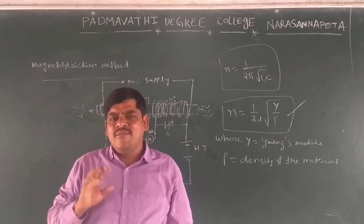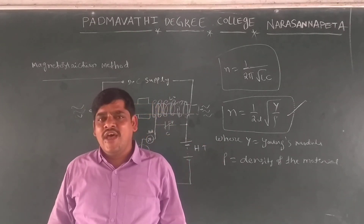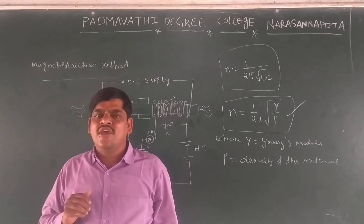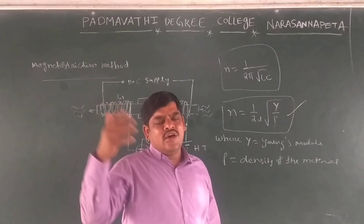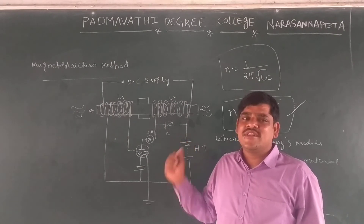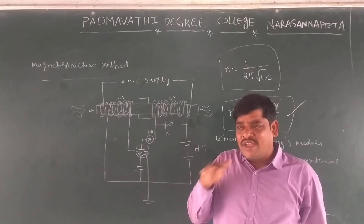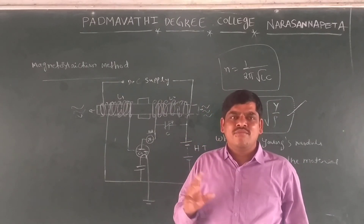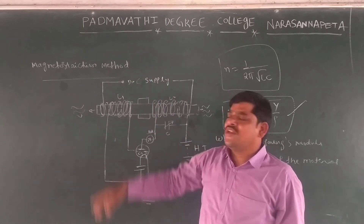The magnetostriction method can produce ultrasonic waves up to about 300 kHz. This is a limitation of the magnetostriction method, as it cannot produce very high frequencies.